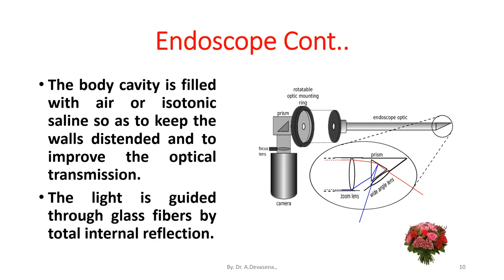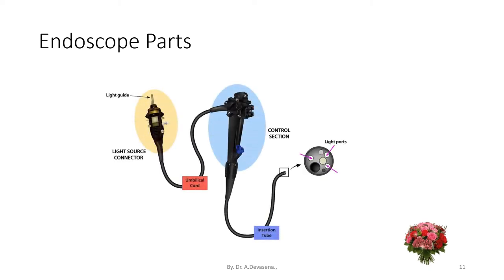The light is guided through glass fibers by total internal reflection. Here is the representation of the optical transmission. The endoscope parts represented in this diagram include the light guide part, light source connector part, optical cord part, control section part, insertion tool part, and the light ports.